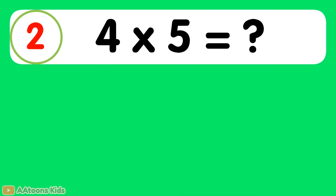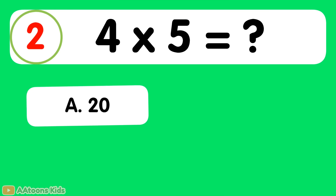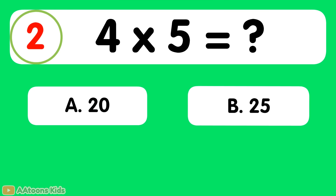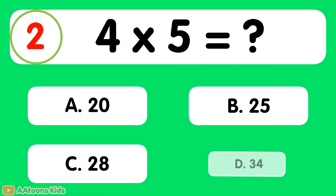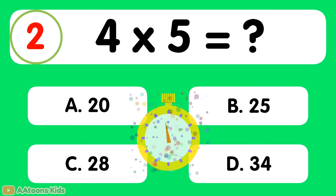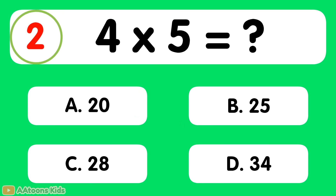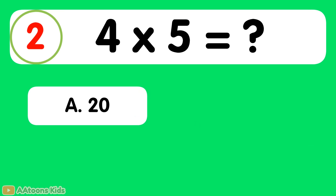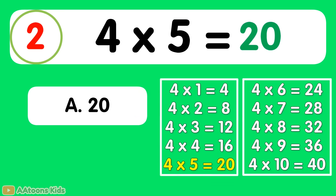4 times 5 is equal to... 20. 4 times 5 is 20.